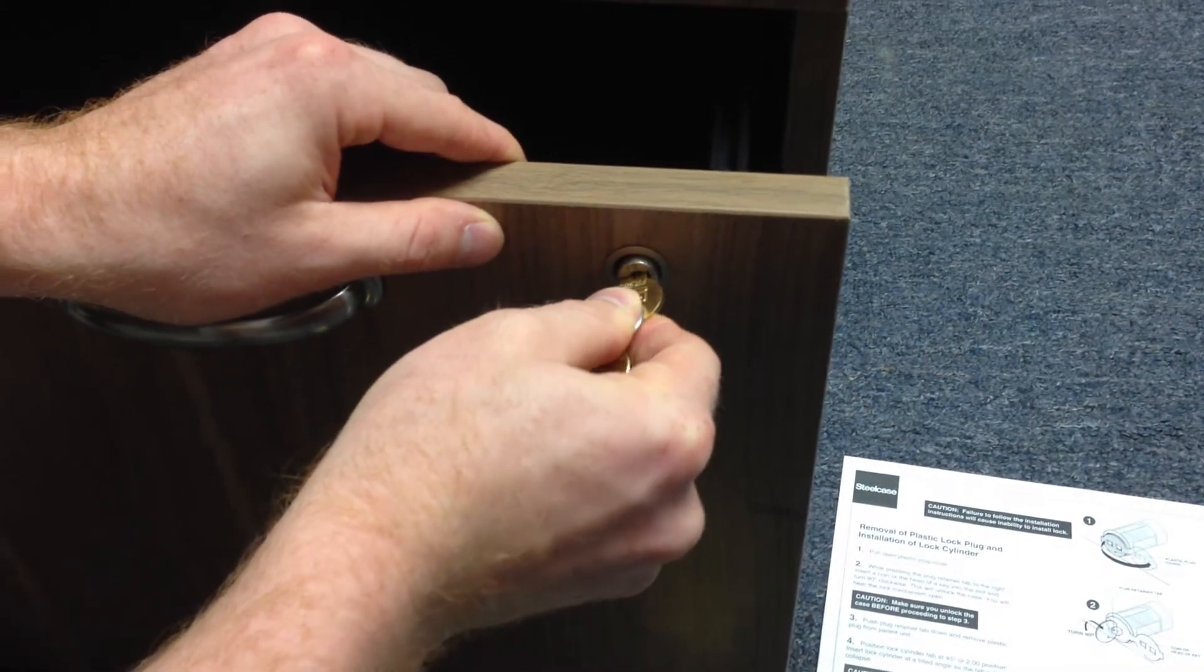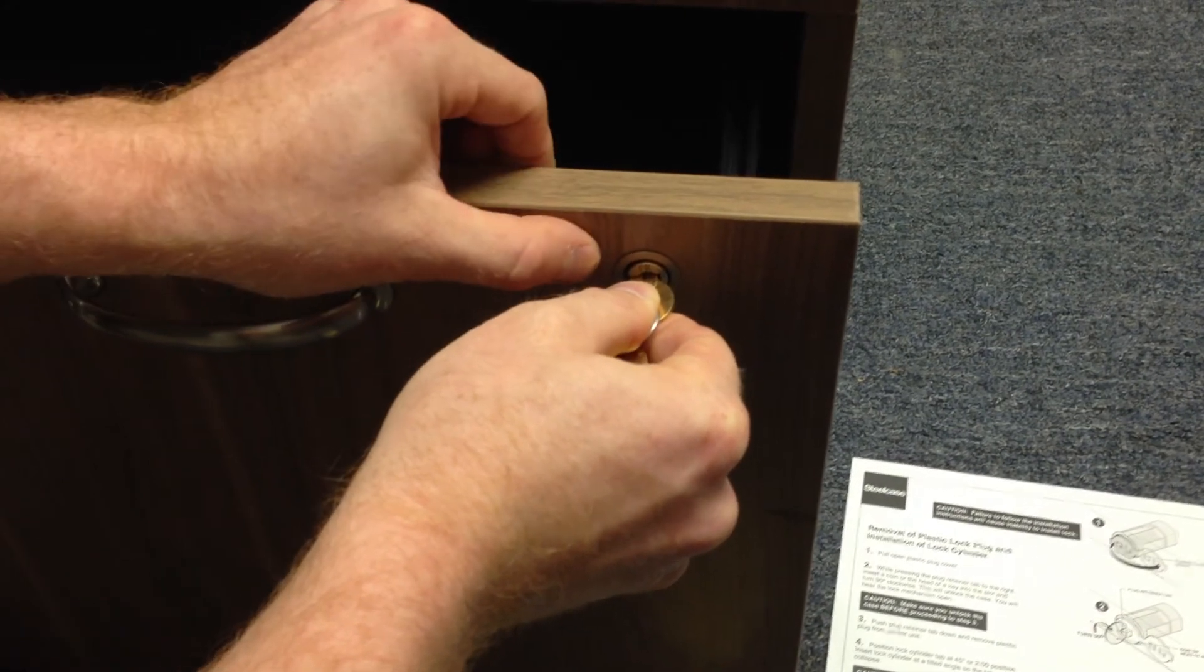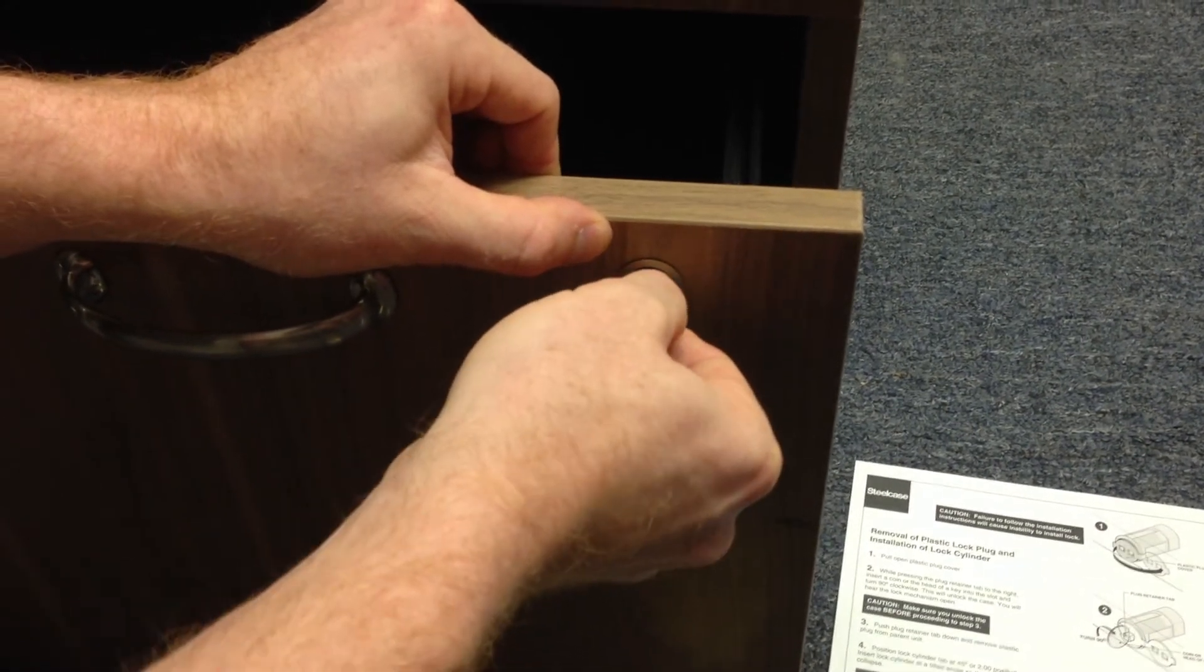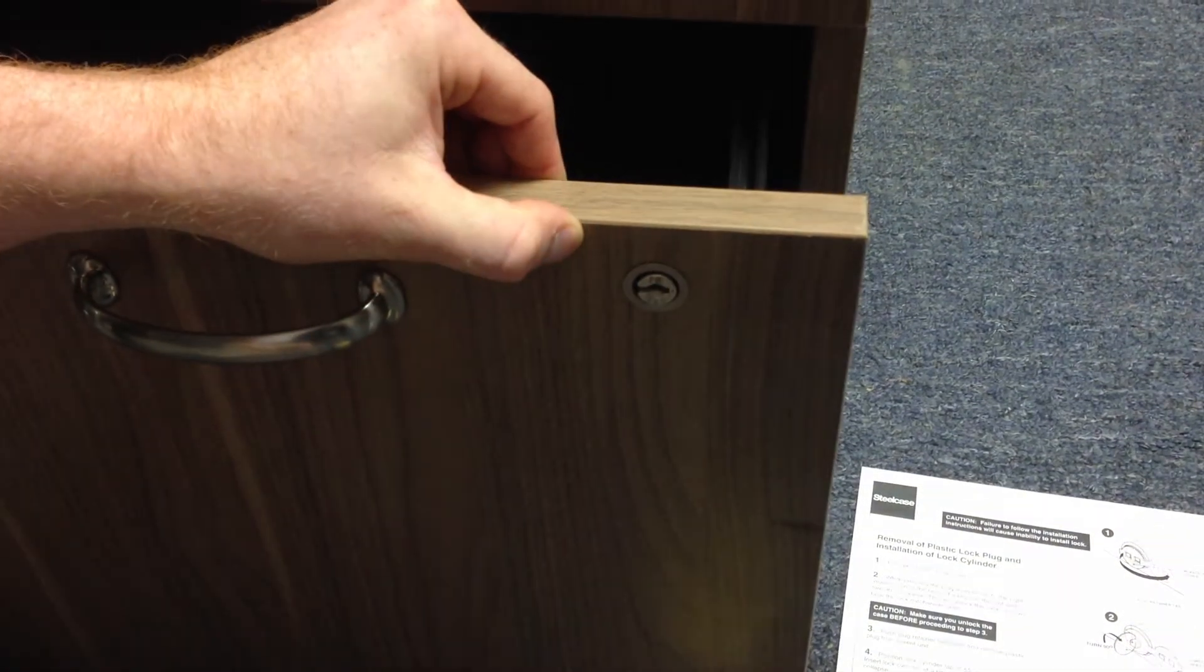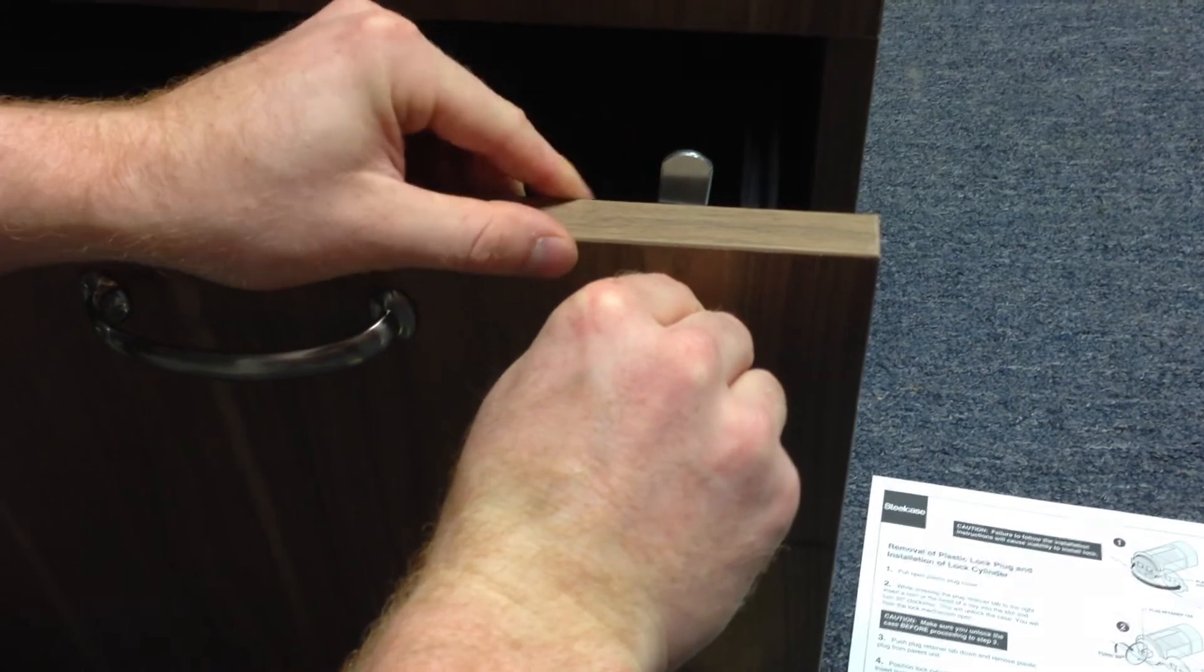I'm going to go in, right like this. Going to turn it. I kind of just wiggle back and forth there. Now it's set into place, flush. Turn it clockwise. Pull the key out. Now when I use the key, you can see the latch functions as it should.